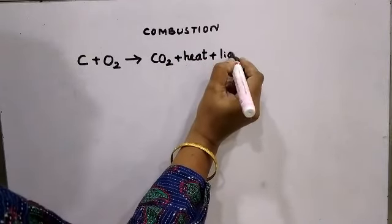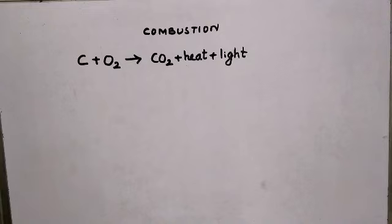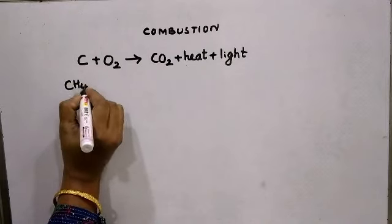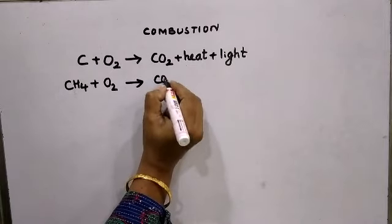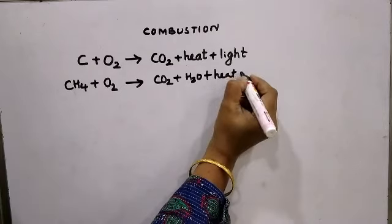Carbon compounds normally combine with oxygen and produce carbon dioxide, water, heat, and light. But since there is no hydrogen atom present when burning pure carbon, formation of water molecules is not possible. Now let's take an example of a carbon compound — methane burns in sufficient supply of oxygen to form carbon dioxide, water, heat, and light.